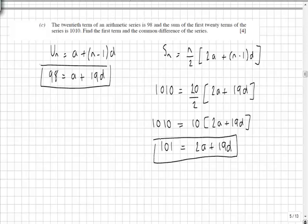Two equations, two unknowns, so this is going to be simultaneous equations. I'm going to take this equation here and rearrange it to find that a is equal to 98 minus 19d. Substitute that into our second equation.